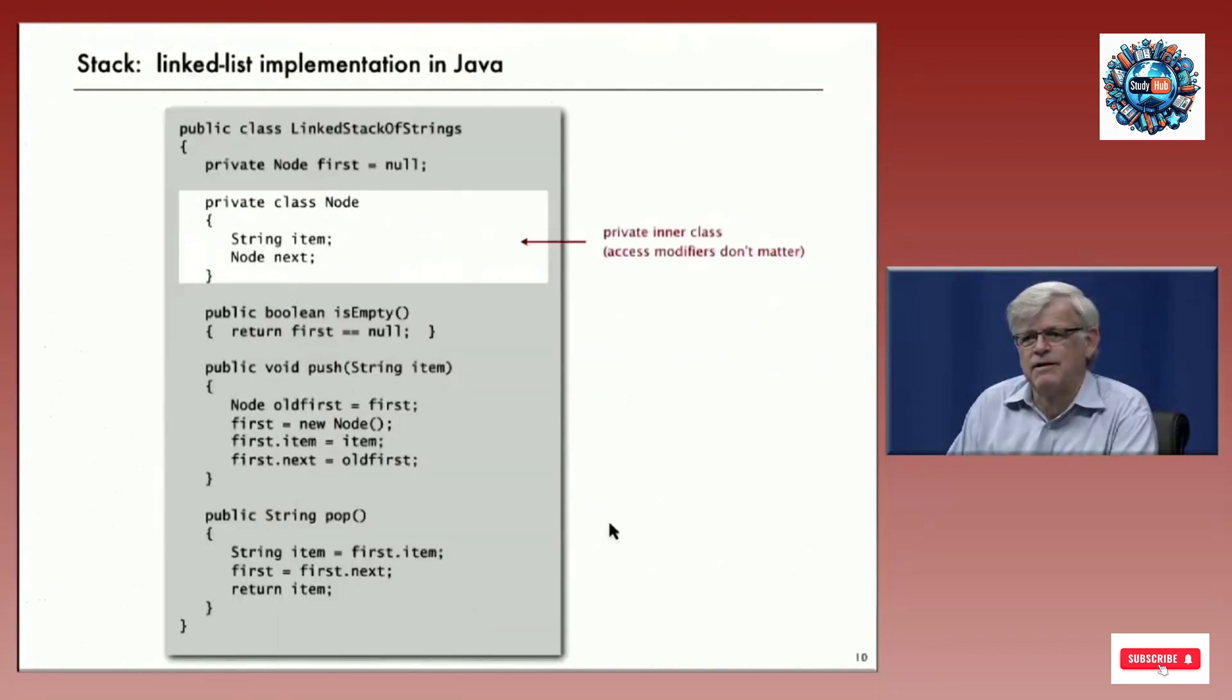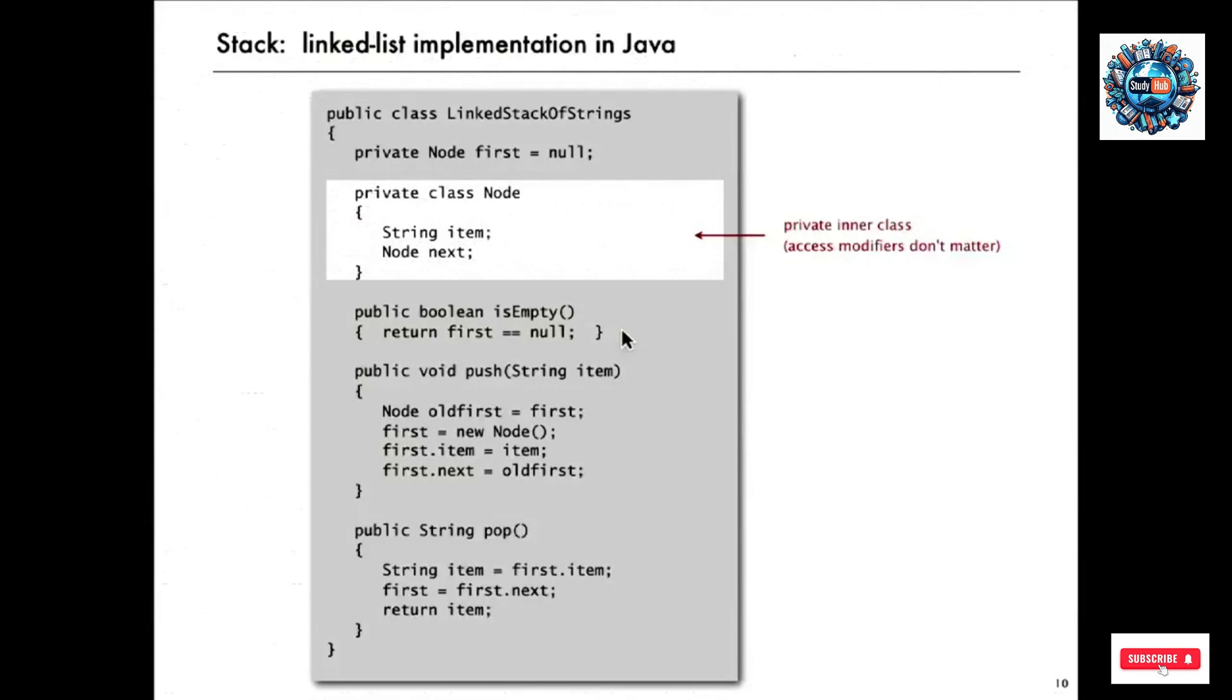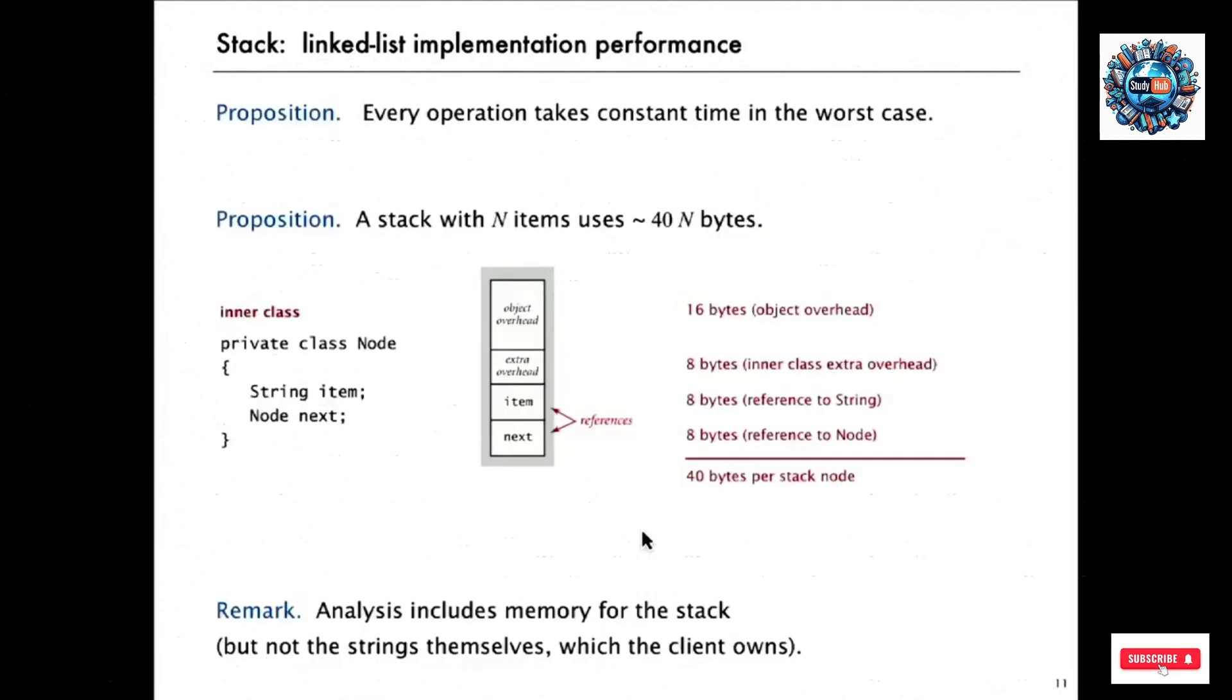This is a complete linked list implementation of all the code to implement a stack of strings in Java. It's a class. The constructor doesn't have to do anything. We have this inner class that we use to build the items in the linked list, and we make it an inner class so we can directly refer to those instance variables. The only instance variable of a stack is a reference to the first node on the list, and it starts out being null. Then isEmpty is just testing whether the first node on the list is null. Push is the four lines of code that I gave on the previous slide and pop is the three lines of code that I gave on the slide before that. That's a complete implementation for linked lists that will work as a fine pushdown stack implementation for any client.